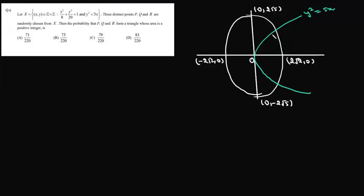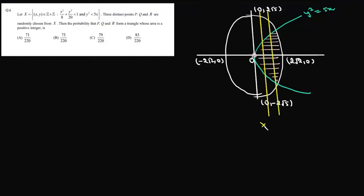We are looking at the region common to both the ellipse and the parabola, excluding points on the parabola and on the ellipse. We need to find how many integral points are possible. The origin is not included since it lies on the parabola. There are two cases: x = 1 and x = 2.